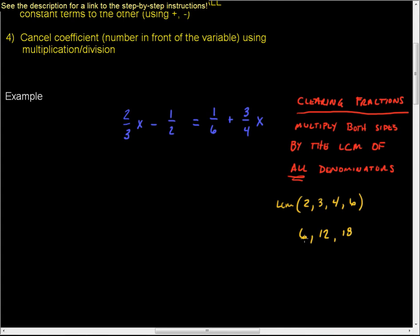And so we go to the next multiple of six and we keep asking ourselves these questions. Does two go into 12? Yes, it does. Does three go into 12? Yes, it does. It's four. Does four go into 12? It does, it's three. And does six go into 12? Yes, it does, it's two. So 12 is our least common multiple.